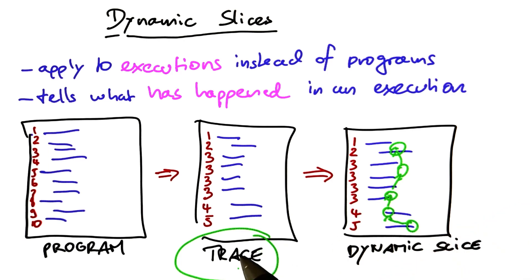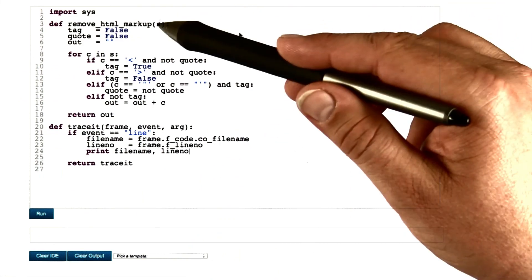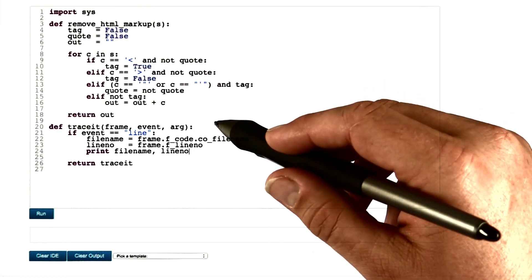The first thing we need for this is a trace. Let me show you how to get traces for Python programs. So here again we have our original remove HTML markup function and what I've written down here is again a tracing function